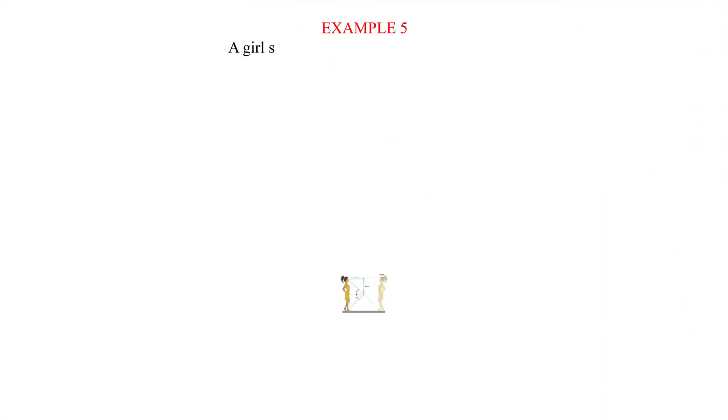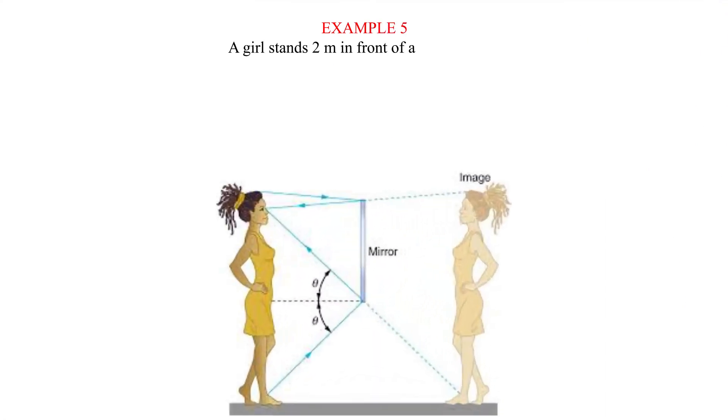Example 5. A girl stands 2 meters in front of a plane mirror. a) Calculate the distance between the girl and her image. b) If the mirror is moved 0.6 meters to the girl, what will be the distance between her and image?